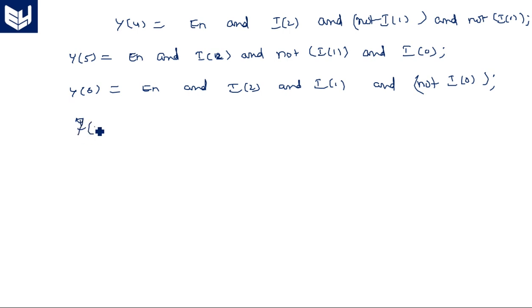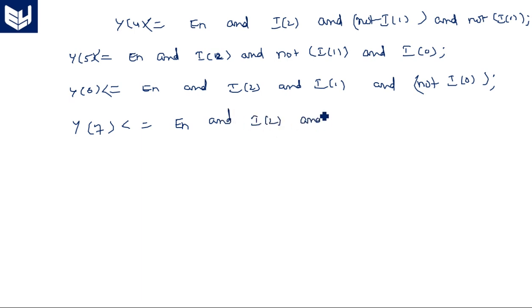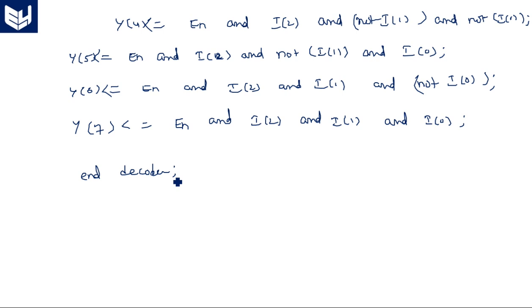And Y(7), the last one — Y(7) is triple 1, so: `y(7) <= enable and i(2) and i(1) and i(0)`. All the expressions are completed. End decoder. This is the simple data flow model where you are directly writing on the Boolean expressions.